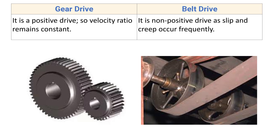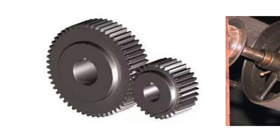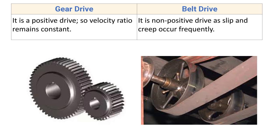Gear drive is a positive drive, so the velocity ratio remains constant. The motion is transmitted by successive engagement and disengagement of teeth, and one tooth slides over another with very negligible friction, giving a constant velocity ratio. Belt drive is a non-positive drive, as slip and creep occur frequently. Since the motion is transmitted due to friction, if the load increases beyond the friction force, slip occurs and we do not get an exact velocity ratio.